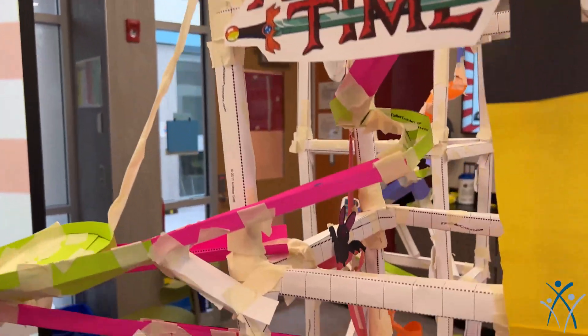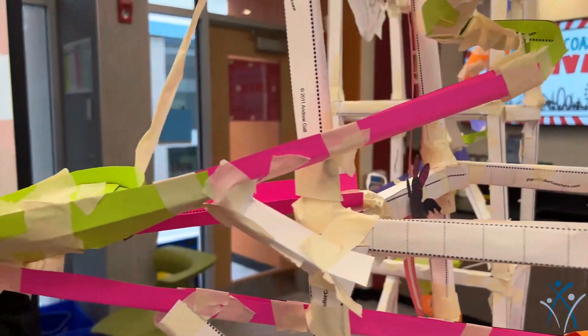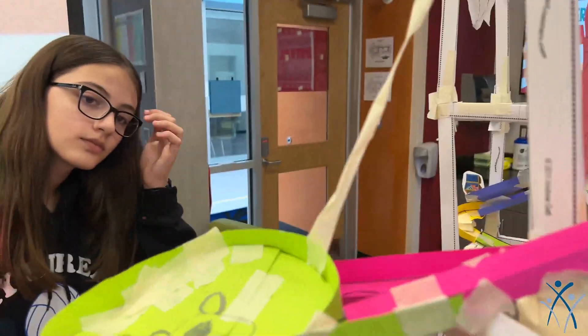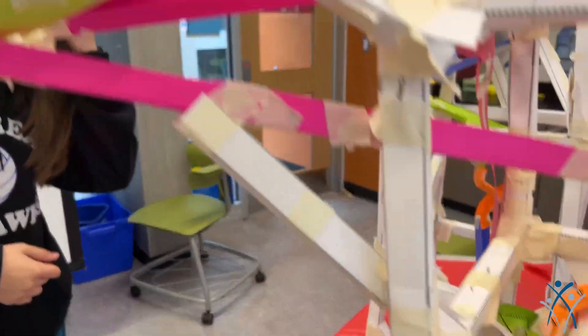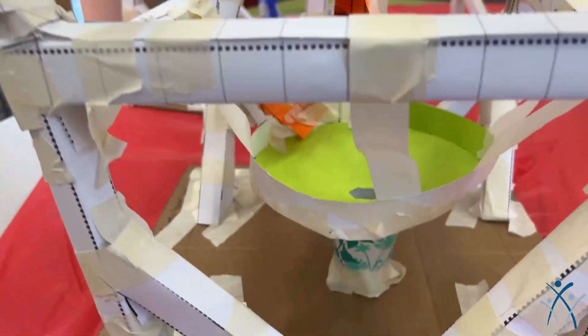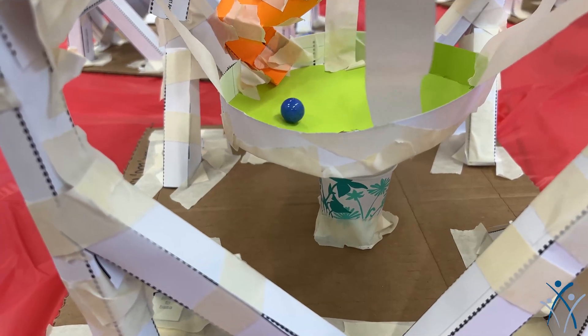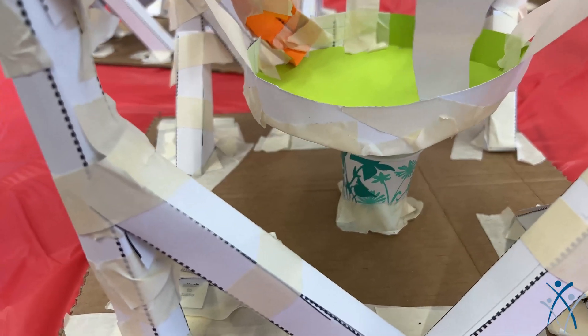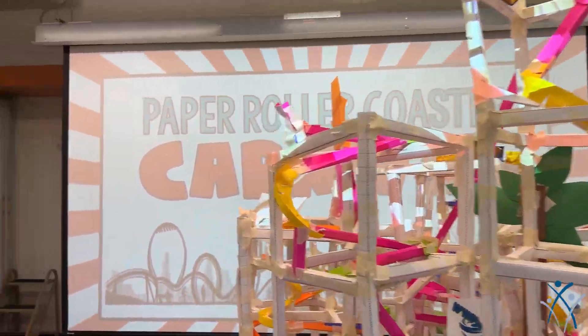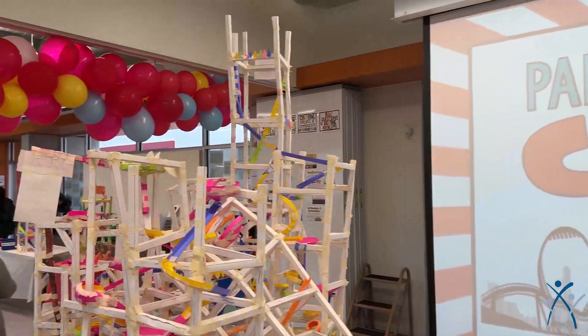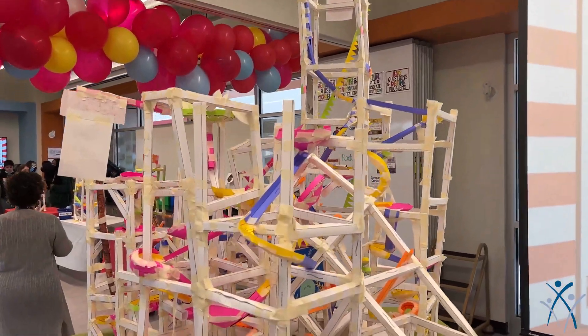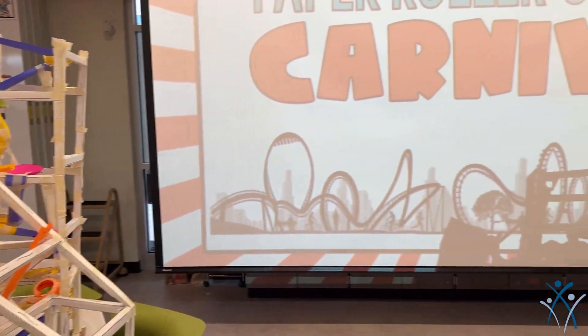Ours was Adventure Time themed. It starts at the top with the marble coming out of the Vampire Princess's mouth, then goes down past all kinds of different things. There are two of Finn's swords, one of the funnels has the marble going into Jake the dog's mouth, and there are bats for the Vampire Princess all around the build.